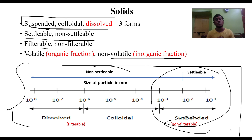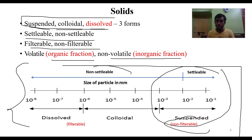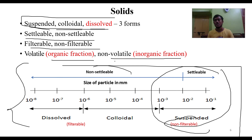In terms of volatility, volatile solids are mainly the organic fractions — fats, carbohydrates, and similar materials. Non-volatile solids are mainly the inorganic fractions, which include salts, metals, and larger particles such as stones, which are non-volatile in nature.